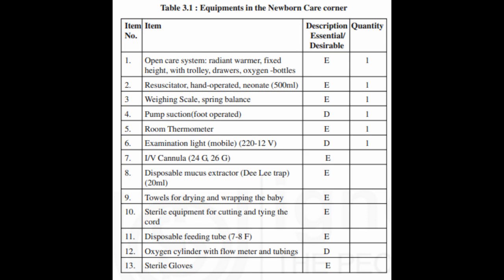3.3.1 Design of Newborn Care Corner — Location and Size. The Newborn Care Corner is set up within the labor room of all health facilities for providing immediate newborn care to all newborns. It should be 20 to 30 square feet in size with a clear floor area. It should be equipped with a radiant warmer and resuscitation kit. The area should be away from draughts of air and should have appropriate power connection for plugging in the radiant warmer. For FRUs and district hospitals, newborn corners are set up in operation theaters where cesarean sections are conducted. It provides an acceptable environment for all infants at birth.